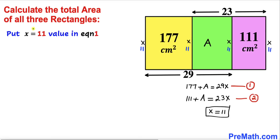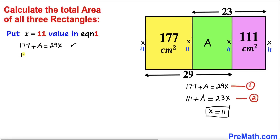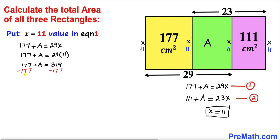So the width x is 11 centimeter throughout. Now let's substitute x equals 11 into Equation 1. This gives us 177 plus A equals 29 times 11.